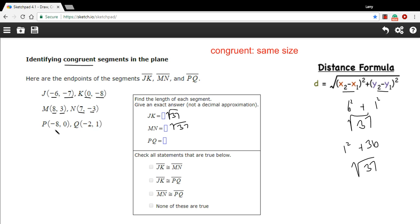Let's check PQ here. Negative 8 to negative 2, that's a difference of 6. Oh and look at this, 0 and 1, that's a difference of 1. So again I'm gonna get 6 squared plus 1 squared, I'm gonna get the square root of 37 for that one as well.